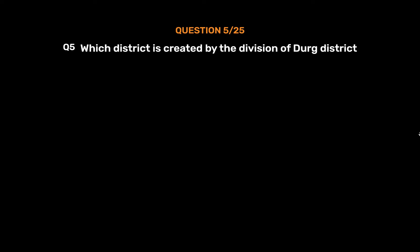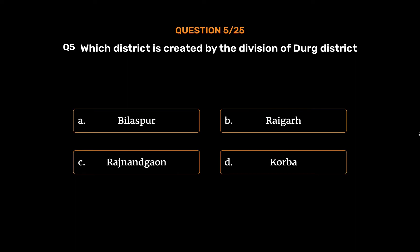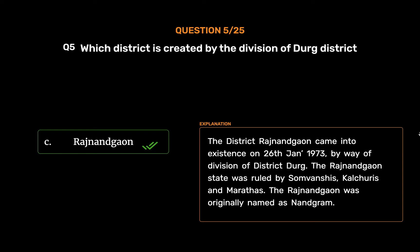Question No. 5: Which district was created by the division of Durg district? Option A: Bilaspur. Option B: Raigarh. Option C: Rajnandgaon. Option D: Korba. The correct answer is Option C: Rajnandgaon. The district of Rajnandgaon came into existence on 26th January 1973 by way of division of district Durg. The Rajnandgaon state was ruled by Somvanshis, Kulchuris and Marathas. Rajnandgaon was originally named Nandagram.